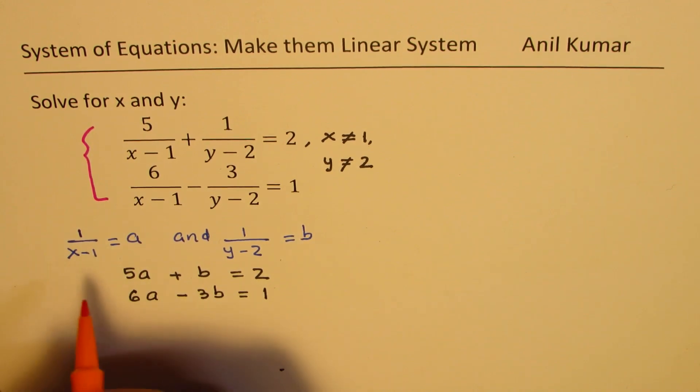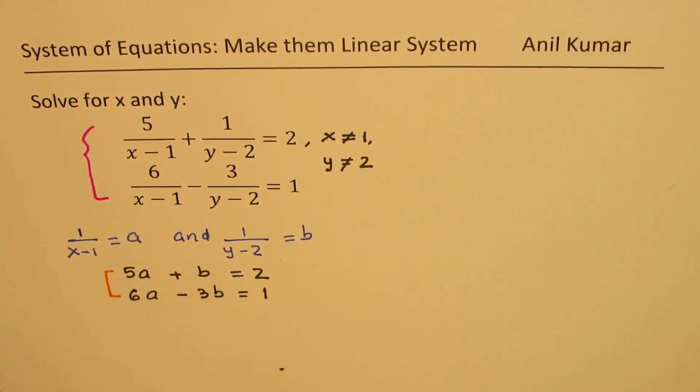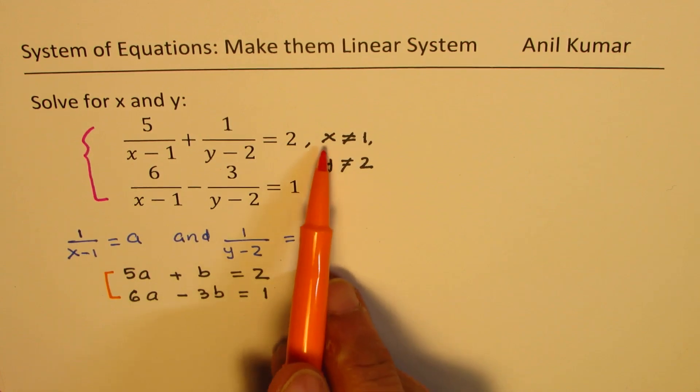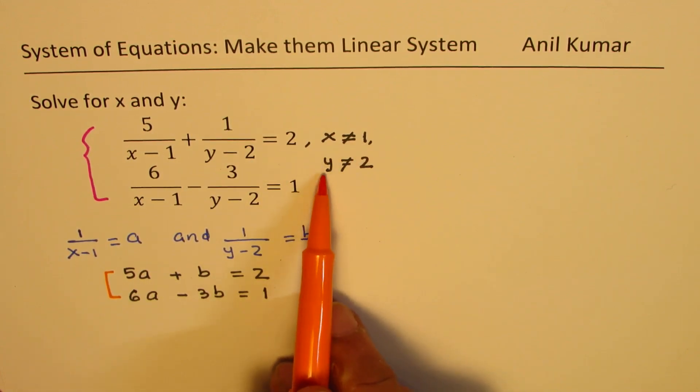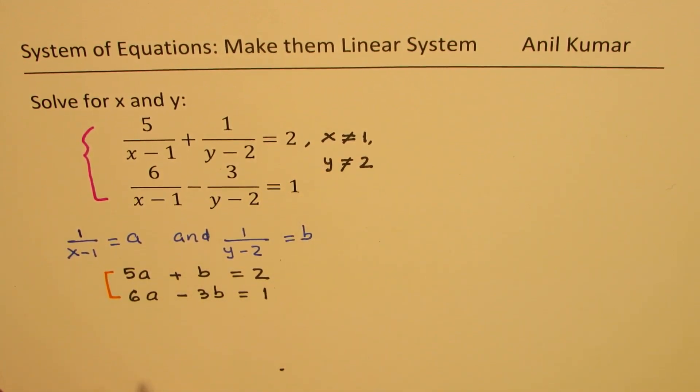So we get a new system of equation, which is the equivalent system. Of course, x cannot be 1 and y cannot be 2.